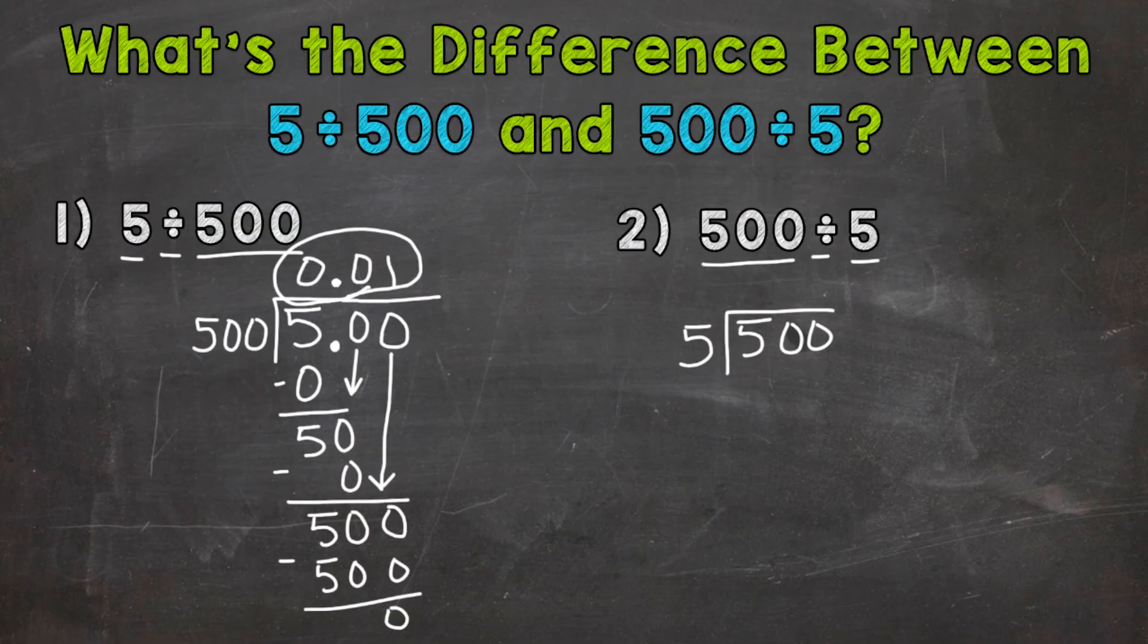So 5 divided by 5, which is 1. 1 times 5 is 5. Subtract. We get 0. Bring down our 0.